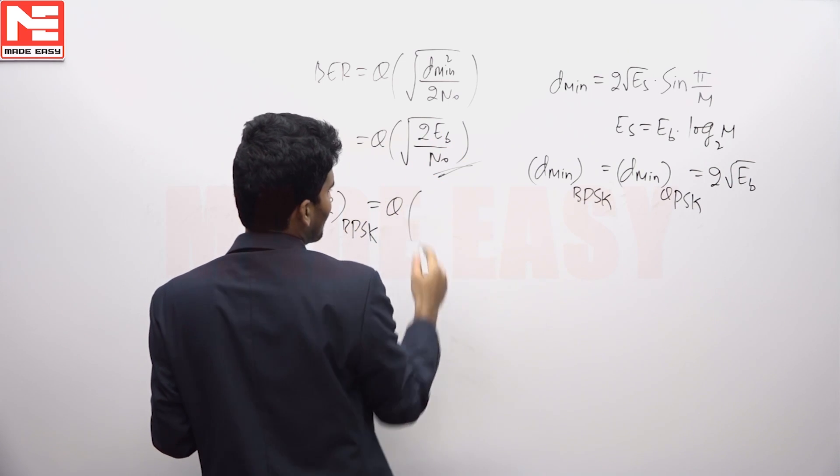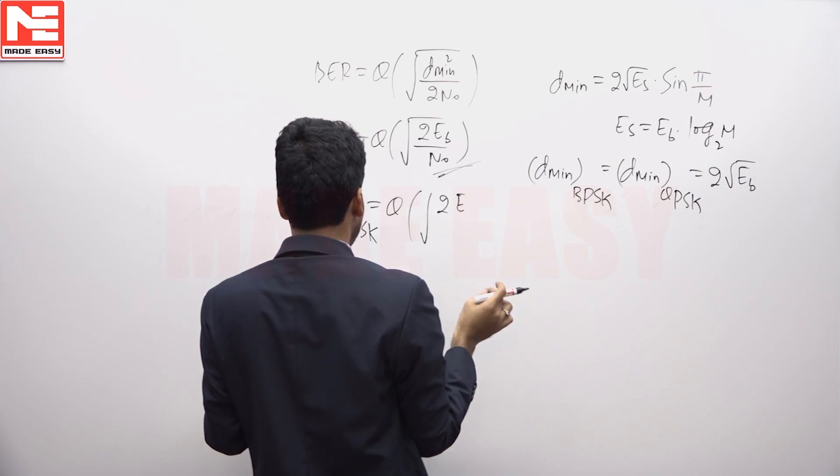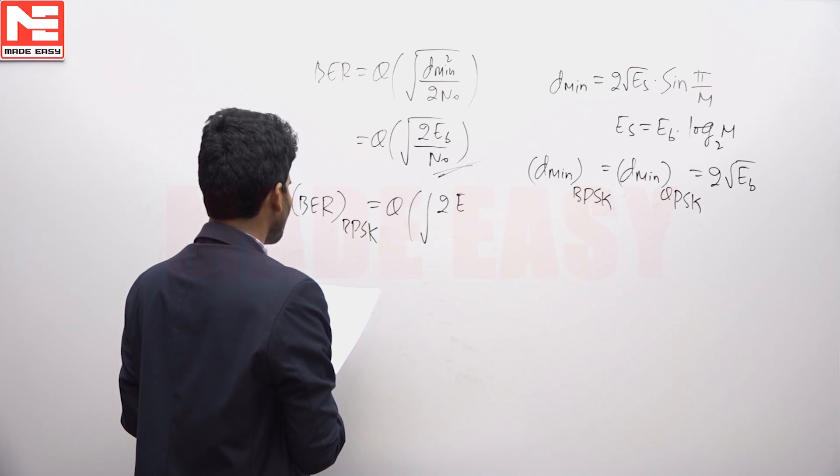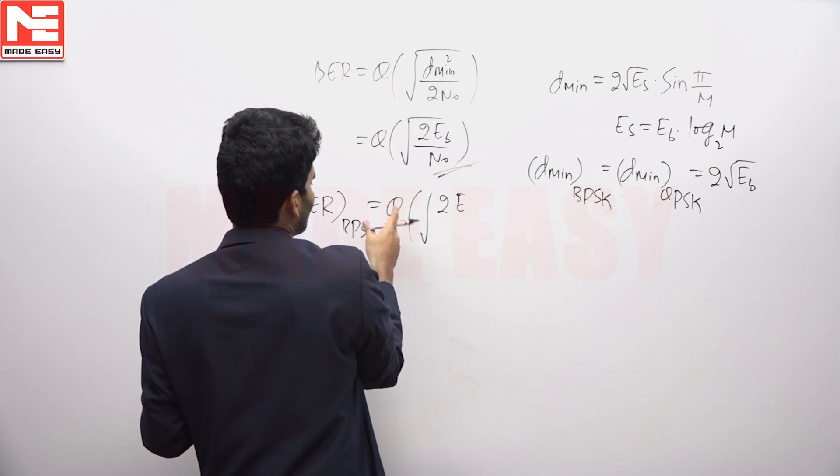The bit error rate of BPSK will be Q of 2. The expression is the same. But in the question it was clearly mentioned: BPSK and QPSK systems with different average bit energies.